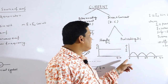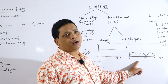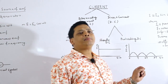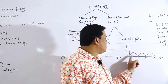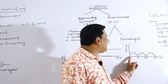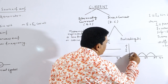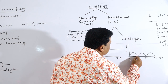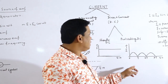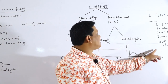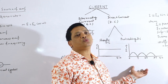This pulsating DC — I have marked capital T, which means time period. Time period is the time taken to complete one cycle. The pattern which is repeated again and again is known as a cycle. The time taken to complete one cycle is known as time period. This type of DC is obtained at the output of a rectifier circuit which we are going to discuss.